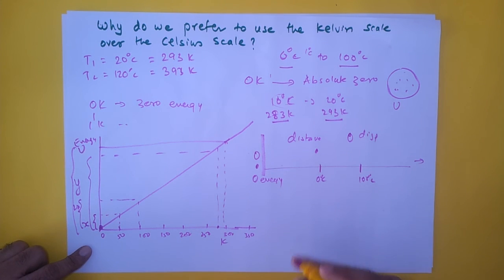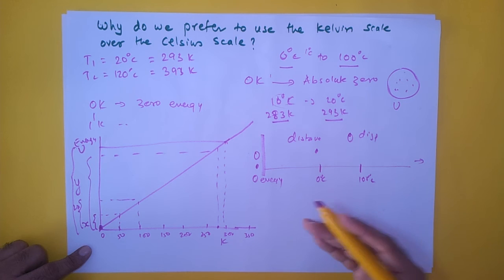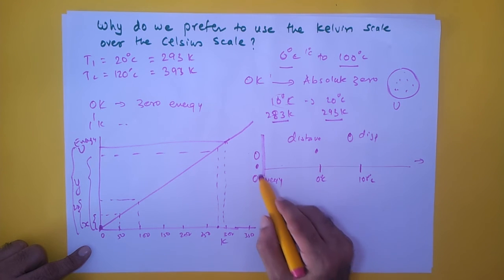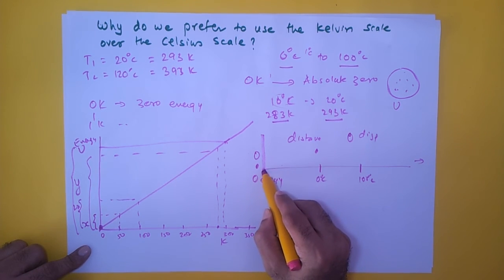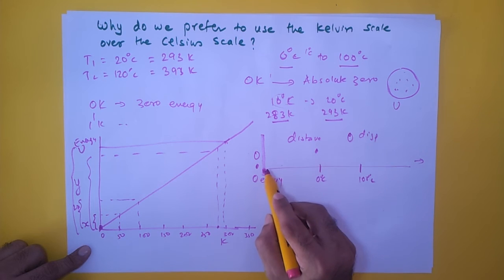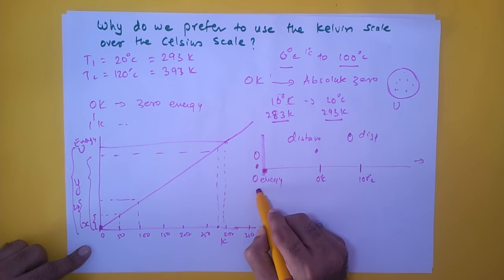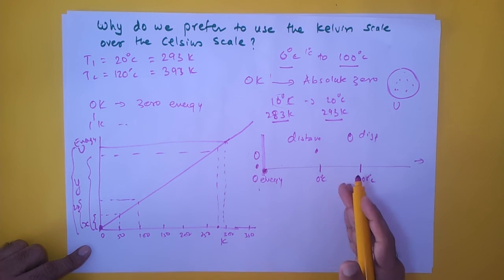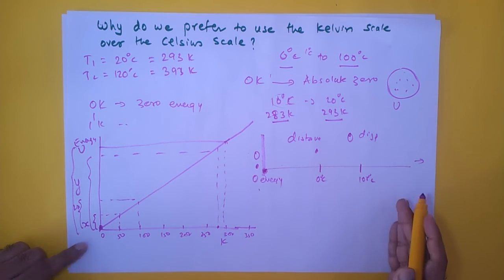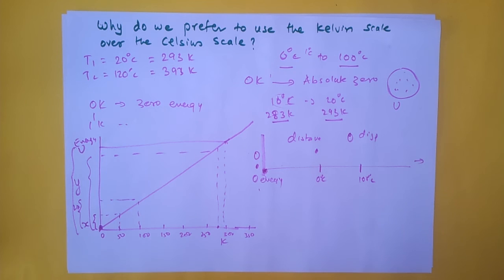The Kelvin scale addresses this by setting zero Kelvin — the lowest possible limit of internal energy — as the bottom of the scale. This makes it easier to use and more logically consistent from a mathematical perspective.